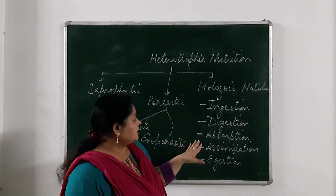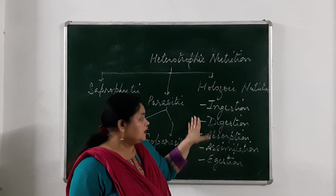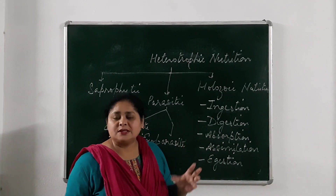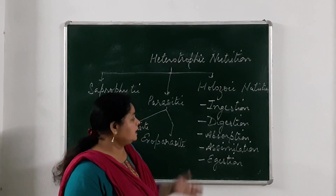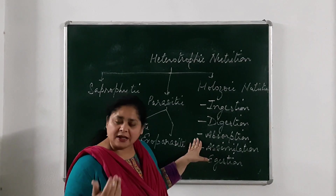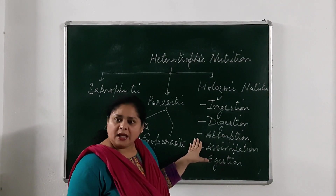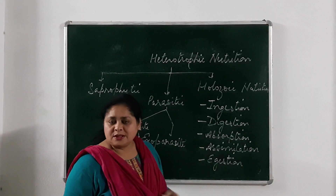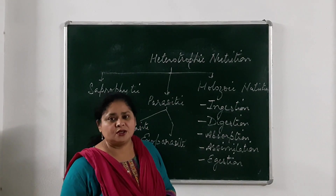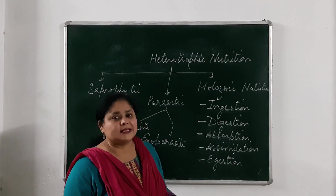The third step is absorption. Absorption means that the food which has been digested — which has been changed into a simple form — is transported to different parts of the body. In our body, this occurs with the help of blood. In the case of unicellular organisms, there is no need for transportation; the digested food simply diffuses into the cell.